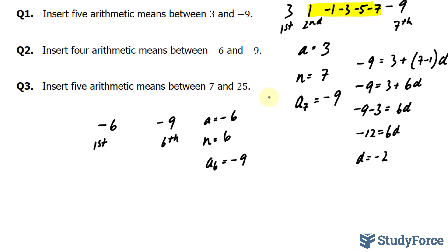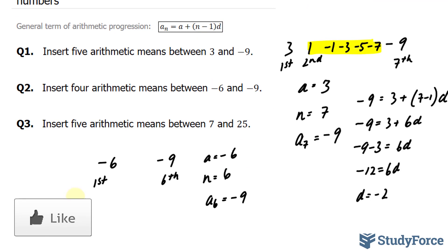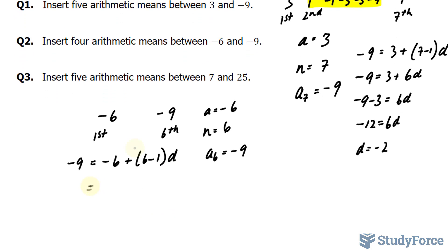Substituting these values into the formula that we had shown here, we have negative 9 is equal to negative 6 plus 6 minus 1, and d is what we're looking for. Simplifying the right side, we get negative 6 plus 5d.